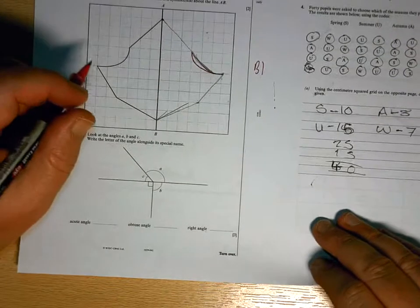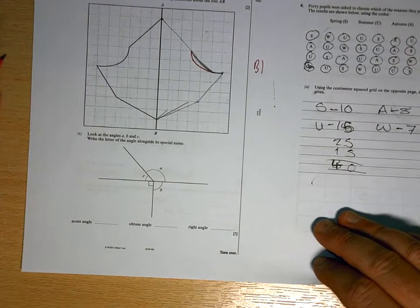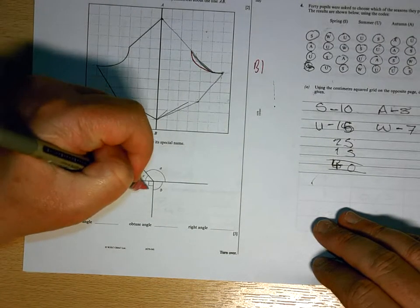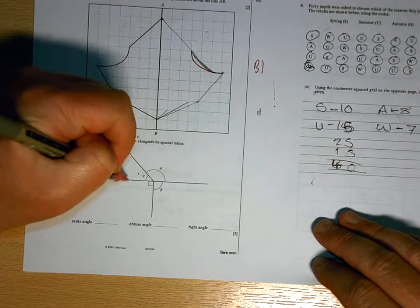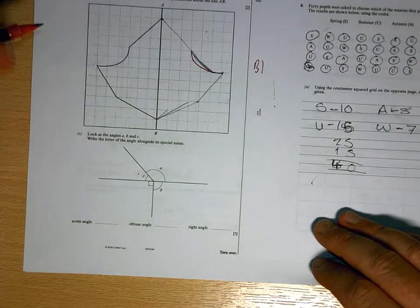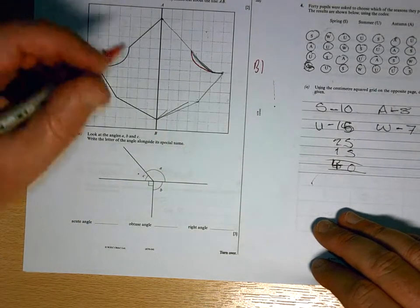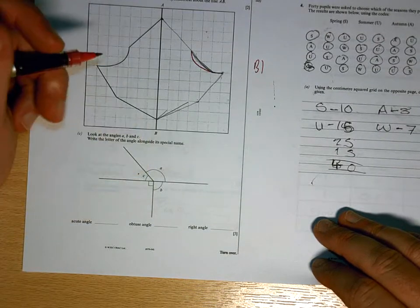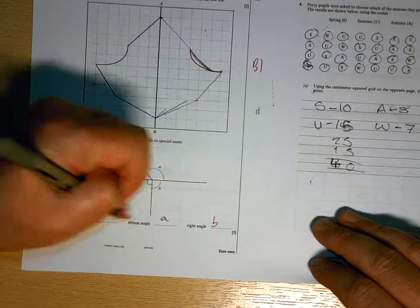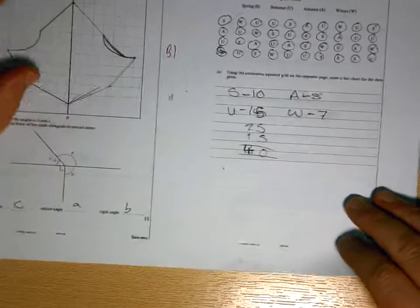Obtuse and acute angles, again, those are something that I'm sure you would have done with Mrs. Williams. Acute is smaller than 90, that one is 90, so that's your acute. Obtuse is bigger than 90, which is what A is. And B is the 90 degree, which is another word for a right angle. So that's what they're looking for there.